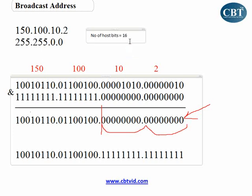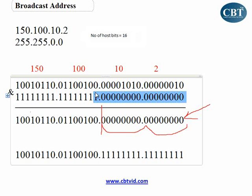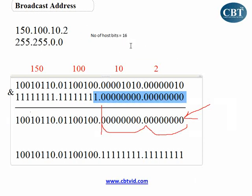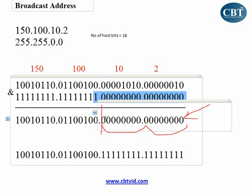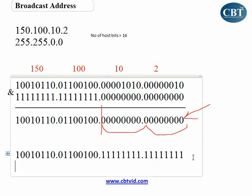So, let me repeat this again. You find out the number of host bits that you have by looking at the subnet mask and counting the number of zeros. Then you look at the network address. You count this many zeros in the network address from the right side and convert them to ones. Then you write the rest as it is. If I convert this number from binary, I will get 150.100.255.255. This is my broadcast address.